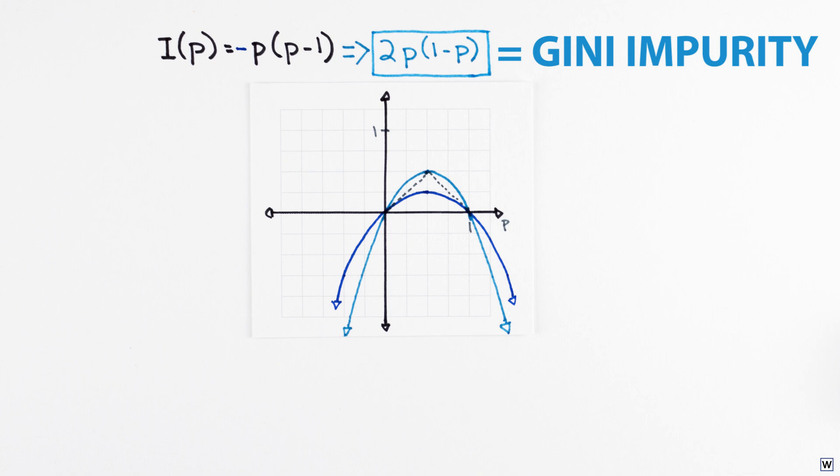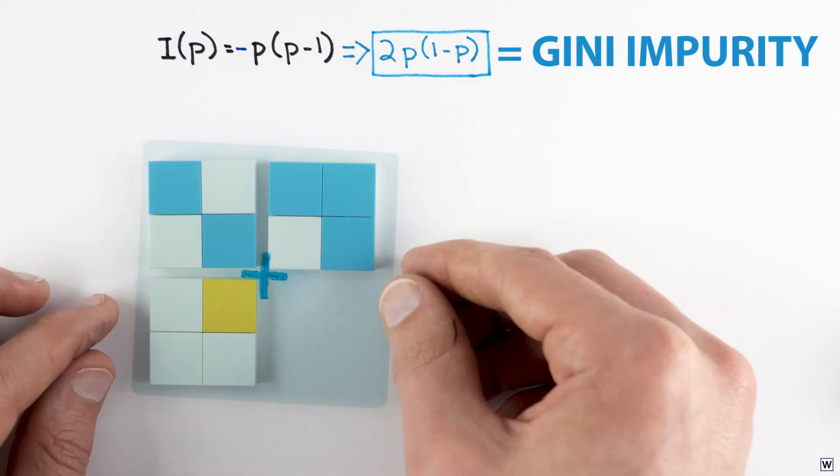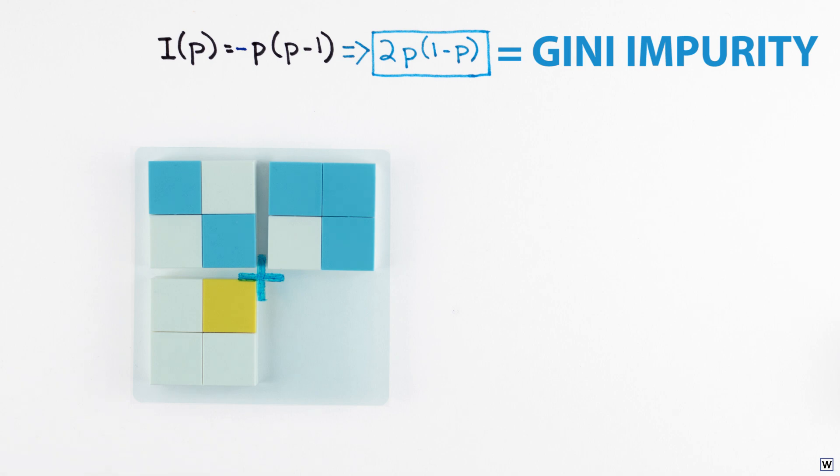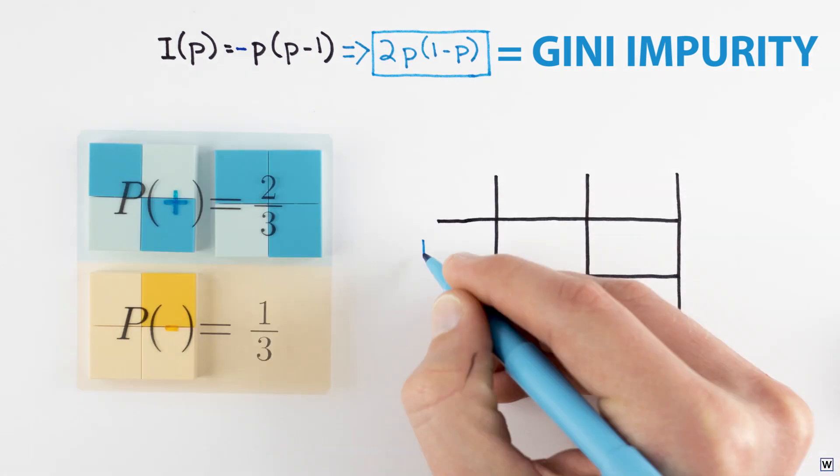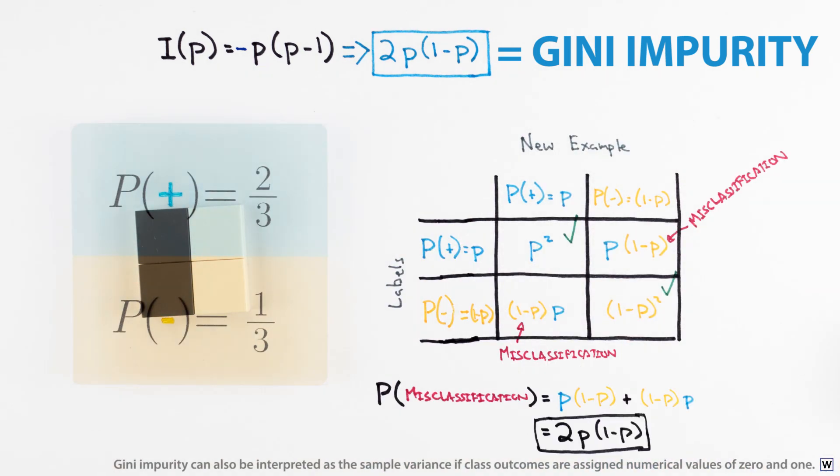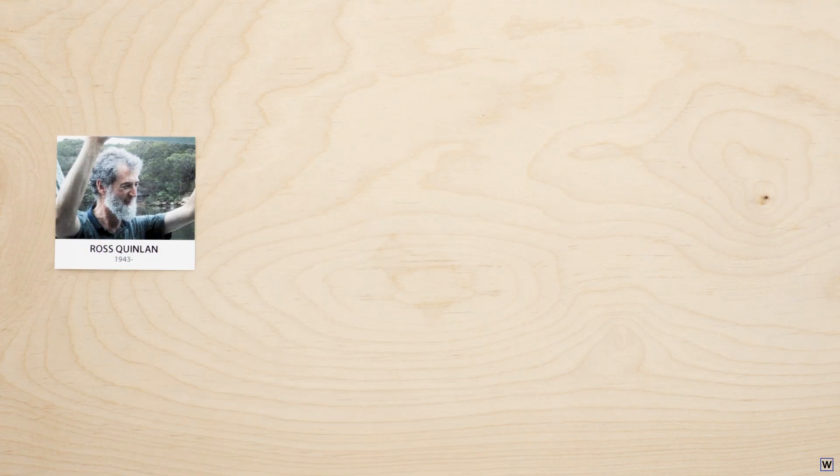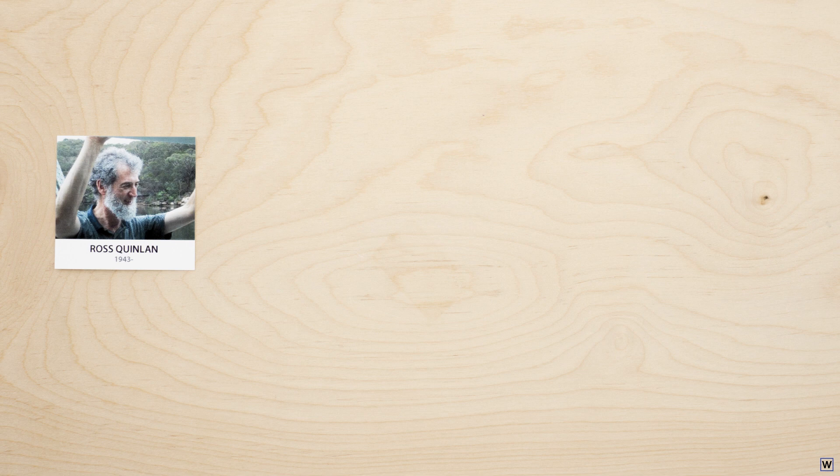One interesting interpretation of the Gini impurity is as the misclassification error rate if instead of assigning majority labels to each node, we had instead assigned probabilities to each node based on class frequencies. Now when our machine learning researcher, Ross Quinlan, set out to create his decision tree algorithm in the late 1970s, he set out down quite a different path.